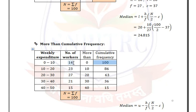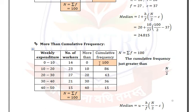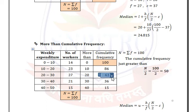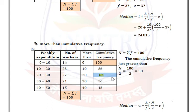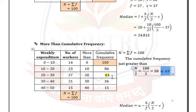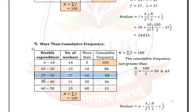In more than cumulative frequency distribution, the first value is capital N, which is summation F. Find the cumulative frequency just greater than N/2: 100/2 = 50, and the cumulative frequency greater than 50 is 63.